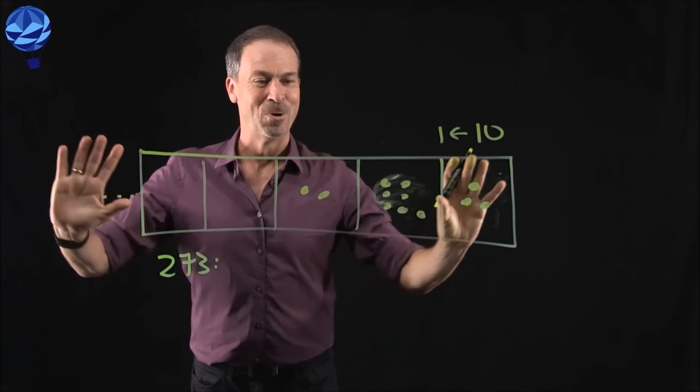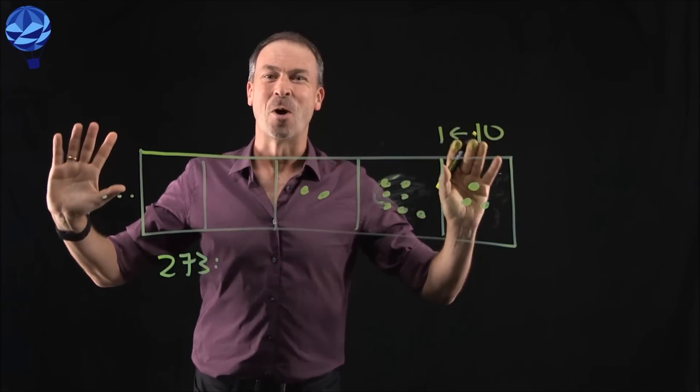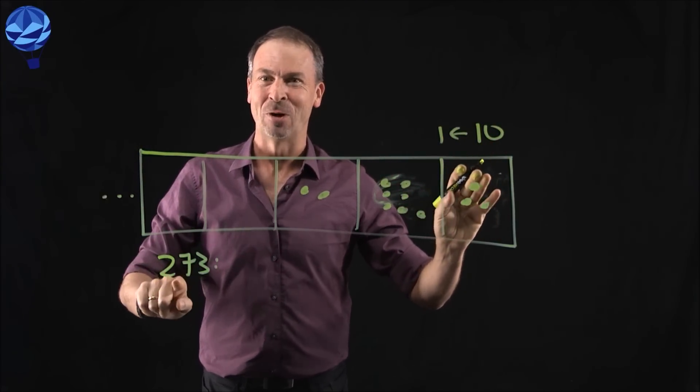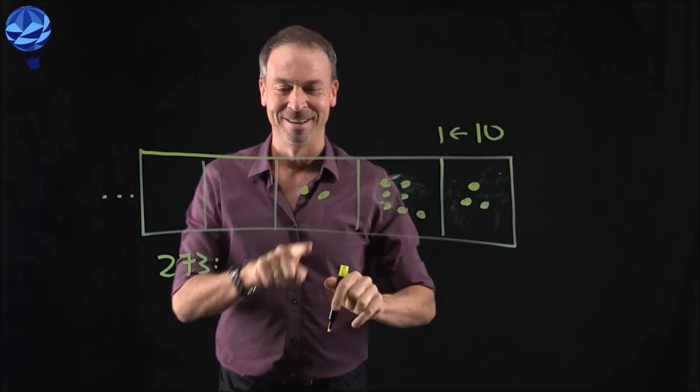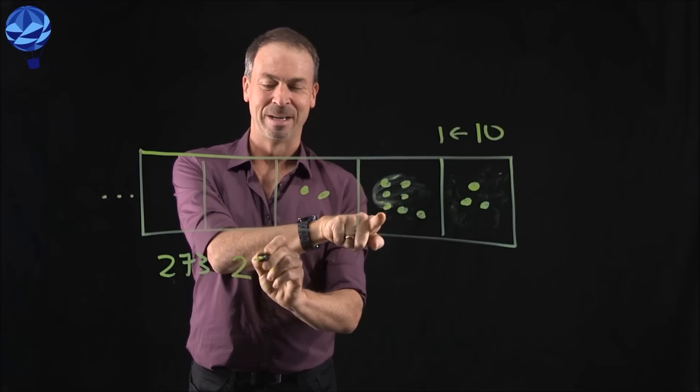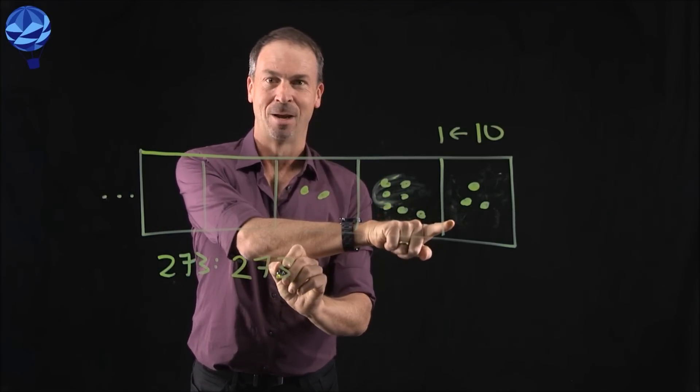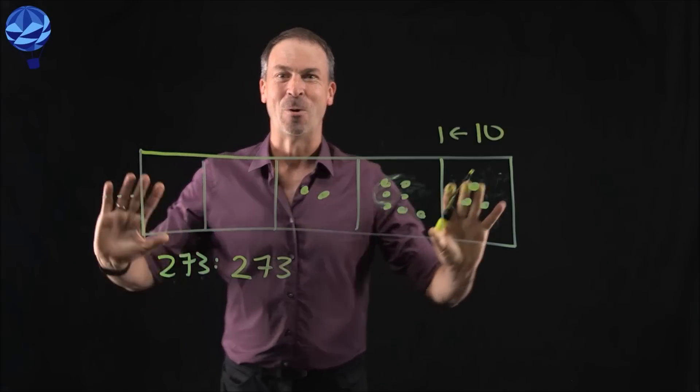Oh, oh, look what we've got. So what's the secret code for the number 273 in a 10-1 machine? It's 273. Whoa.